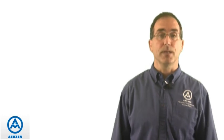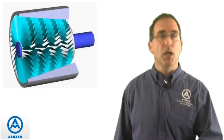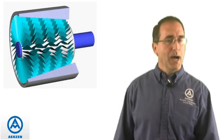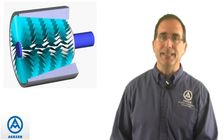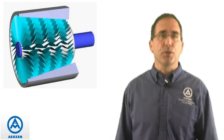With the multi-stage compressor, that process gets repeated a number of times. That's why it can operate at a relatively low speed, which is basically the same speed as the motor, typically 3600 RPM.